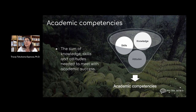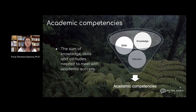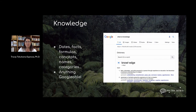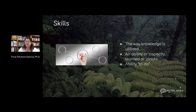This leads us to the academic competencies that are achieved within school settings. Academic competencies are important — very important for school success and society success — but it's only one type of learning. We define academic competencies as being the sum of the knowledge, skills, and attitudes needed in order to meet with academic success. Knowledge itself is defined as those dates, facts, formulas, concepts, names, and categories. Anything that's basically Google-able is a knowledge-based competency.